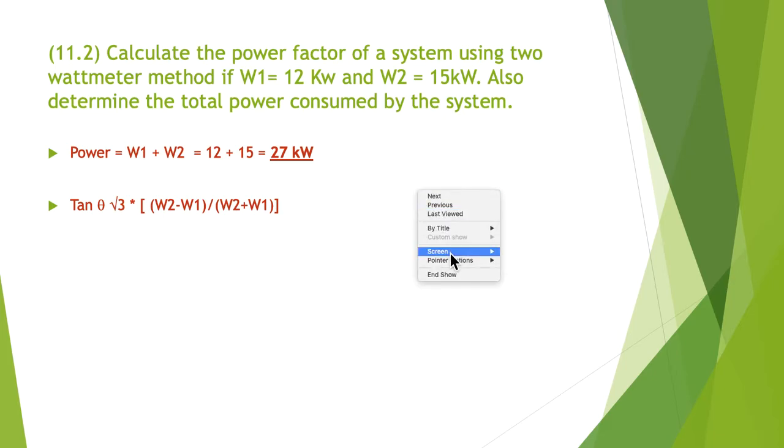Next we need to recognize that we need this special formula. The formula gives us the tan of the angle. So tan of the angle is root 3 times W1 minus W2 divided by W2 plus W1.